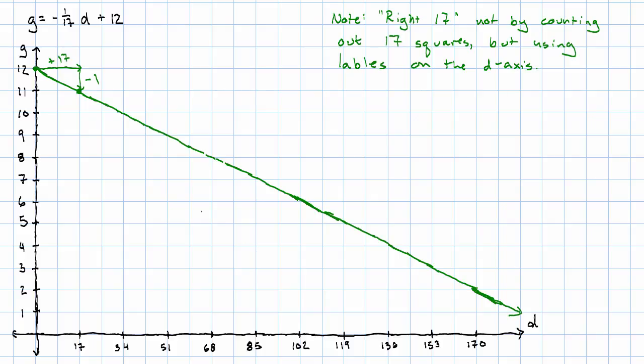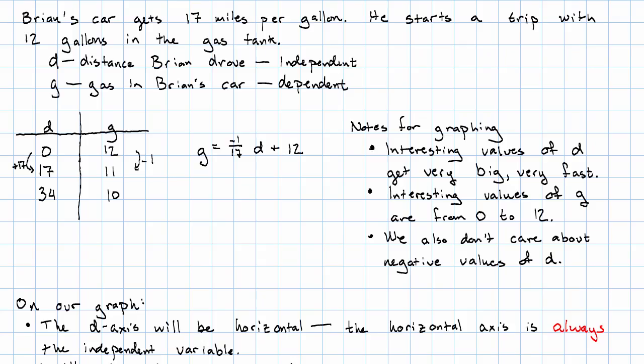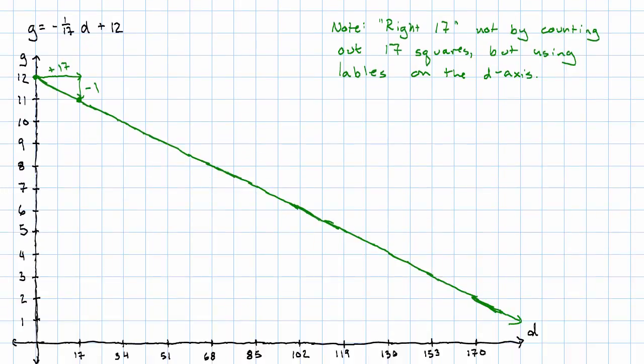Notice with the D axis I drew, my line doesn't make it quite all the way down there. That's okay. Brian's probably not going to drive until he runs out of gas anyway. But here's my graph for this equation, which in turn describes the amount of gas Brian has in terms of the distance that he drives. This is reasonable. The further he drives, the less gas he has.